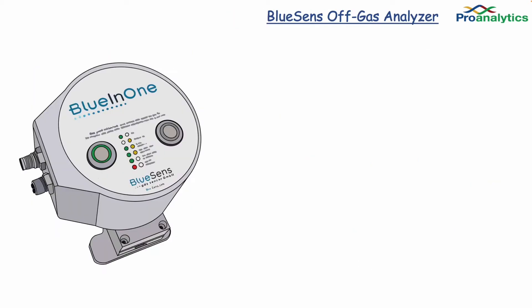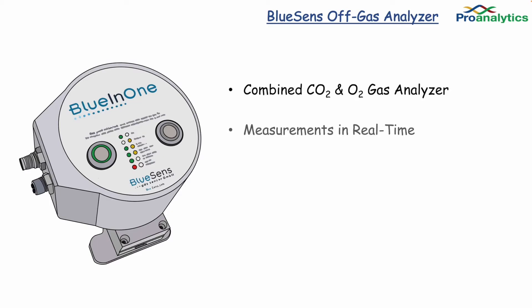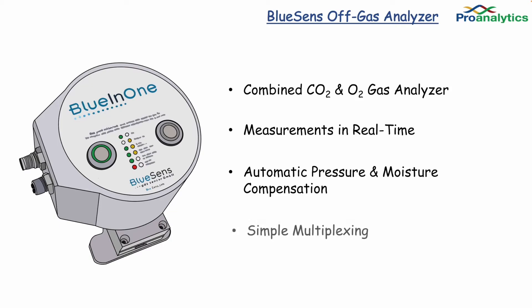BlueSense is a non-invasive real-time gas analyzer that attaches to the exhaust of your reactor. Here is the BlueIn1 sensor, which measures CO2 and O2 off-gas in real-time. The sensor automatically compensates for pressure and humidity during the run.